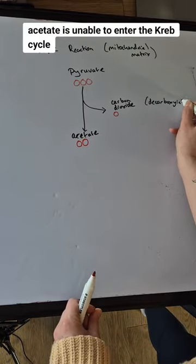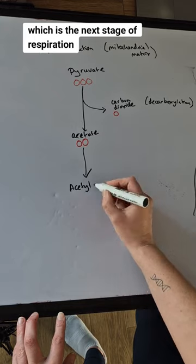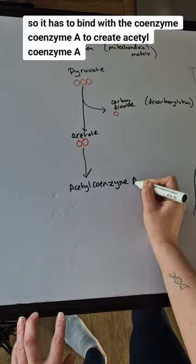Acetate is unable to enter the Krebs cycle, which is the next stage of respiration. So it has to bind with the coenzyme, coenzyme A.